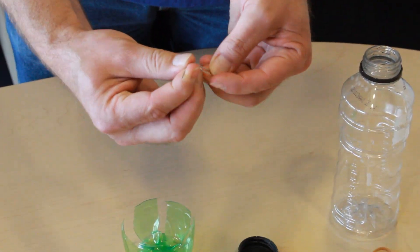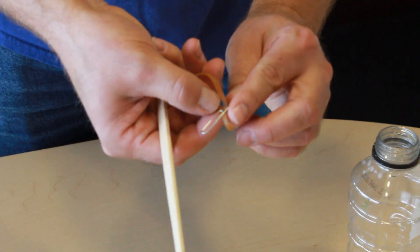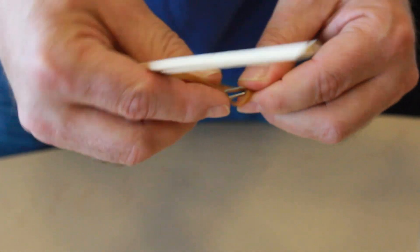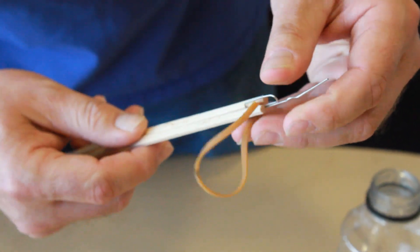Take one paper clip, straighten out a leg of it, hook a rubber band through it, and hold that with your chopsticks.